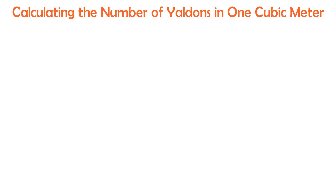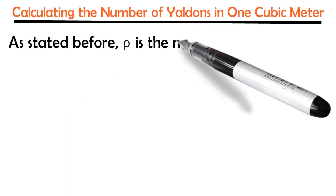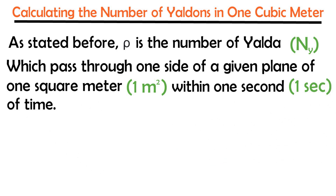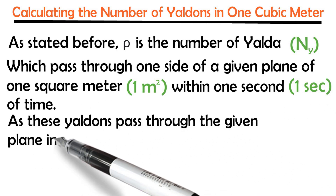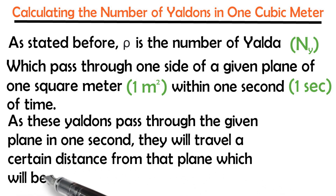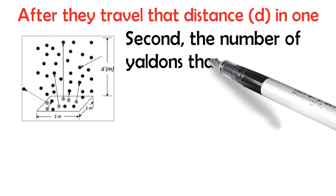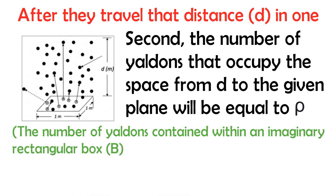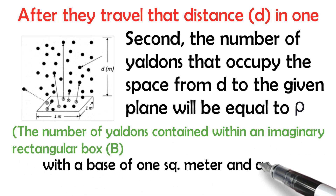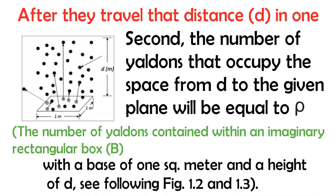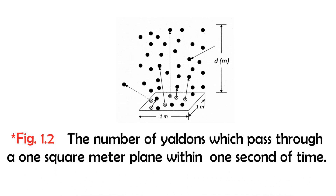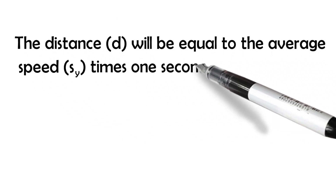Calculating the number of Yaldons in one cubic meter: raw is the number of Yaldons NY which pass through one side of a given plane of one square meter within one second of time. As these Yaldons pass through the given plane in one second, they will travel a certain distance from that plane, known as D. The number of Yaldons that occupy the space from D to the given plane will equal raw — the number of Yaldons contained within an imaginary rectangular box with a base of one square meter and a height of D. The distance D will equal the average speed times one second.